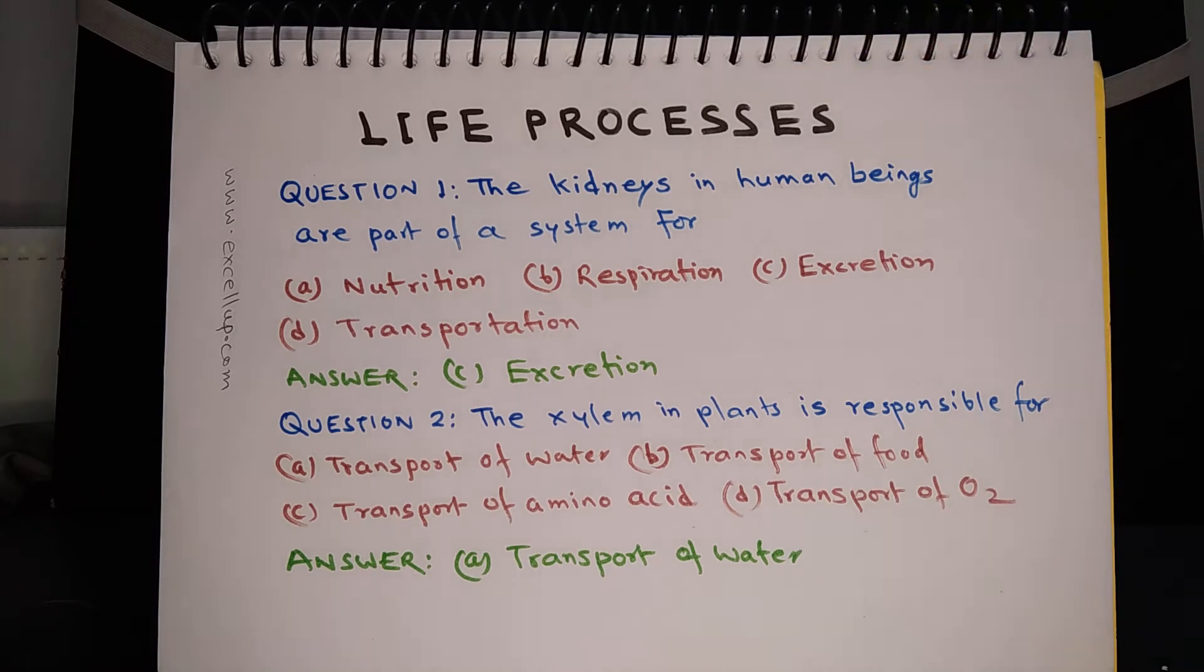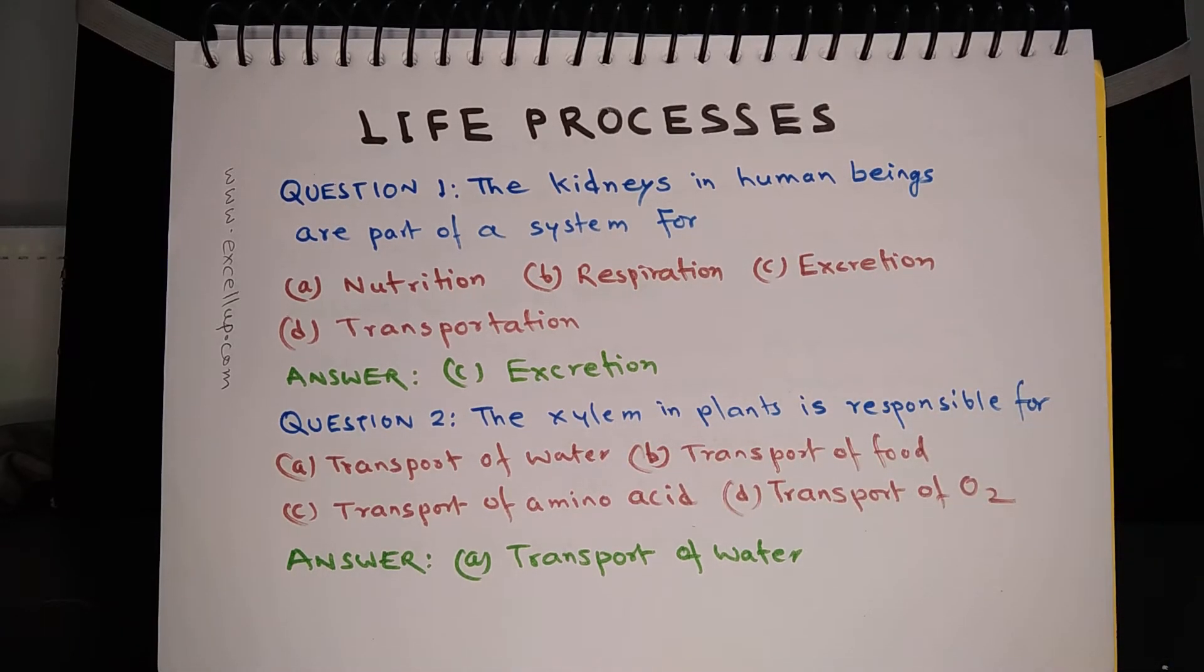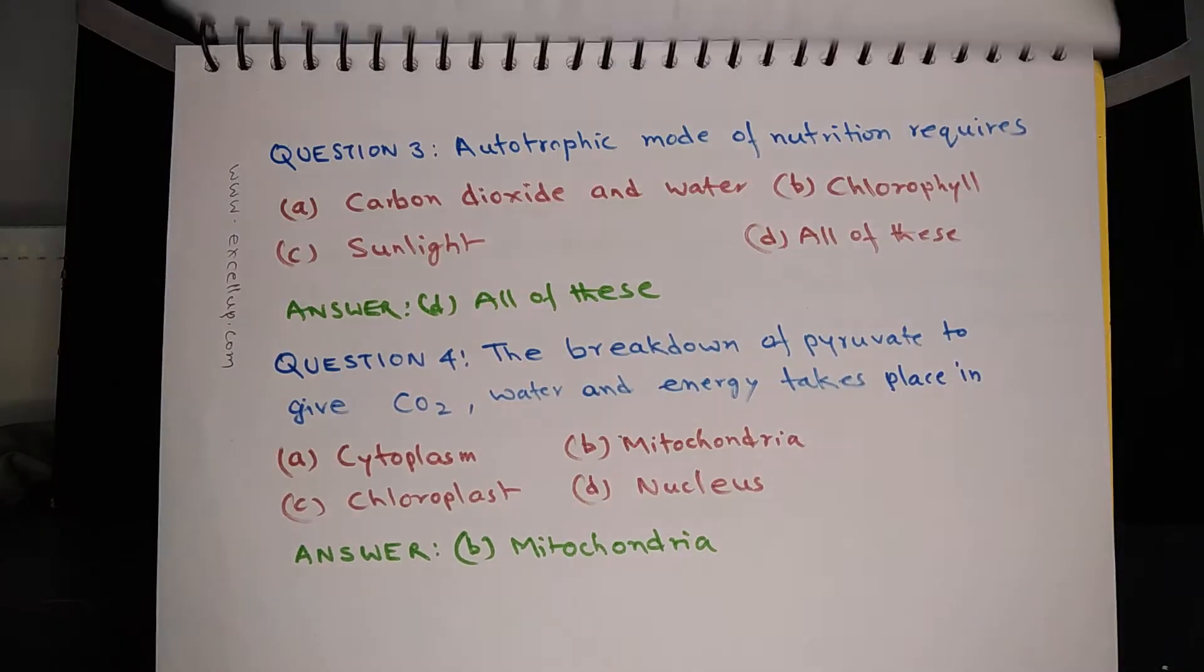Question 1: The kidneys in human beings are part of a system for nutrition, respiration, excretion, and transportation. The answer is straightforward, this is excretion because by the time you reach Class 10, all of you must remember that kidney is a part of the excretory system. Question 2: The xylem in plants is responsible for transport of water, transport of food, transport of amino acid, and transport of oxygen. The answer is A, transport of water.